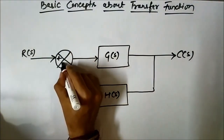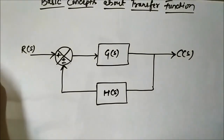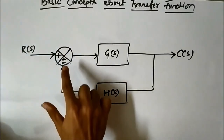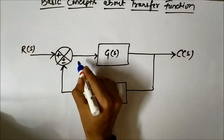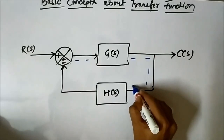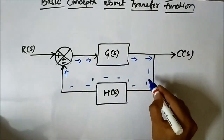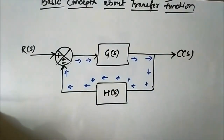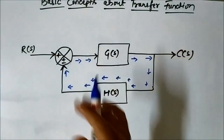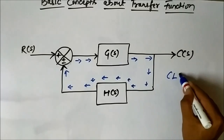Now, the open loop transfer function — see this feedback connection here. This feedback path forms a closed loop. This whole connection forms a closed path. So the transfer function of the entire system considering both G(s) and H(s) with this closed loop intact is called the closed loop transfer function.